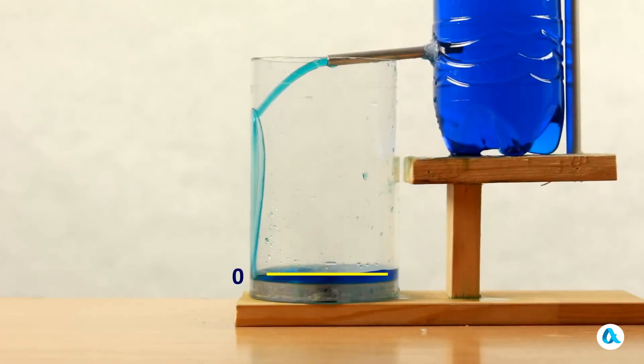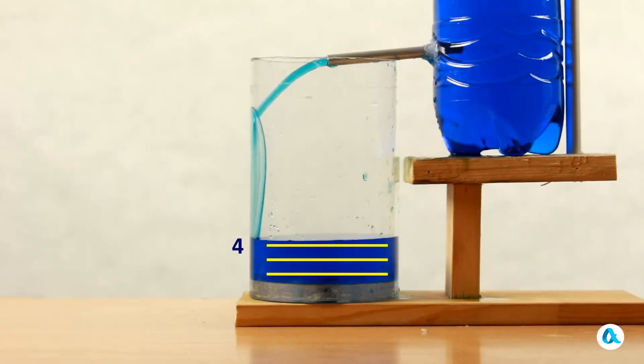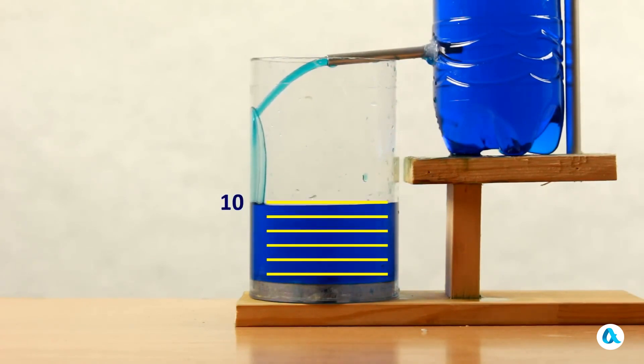And we will again observe how the water level in the lower vessel rises at equal intervals of time. It is already evident that the distance between consecutive marks is constant, which means the water from the Marriott bottle flows evenly.